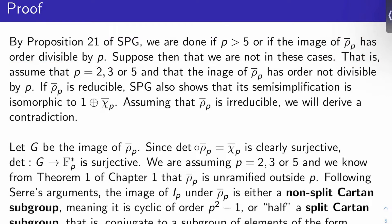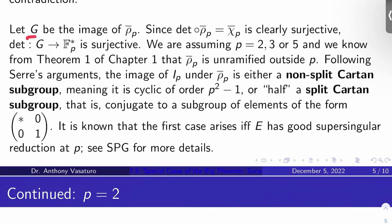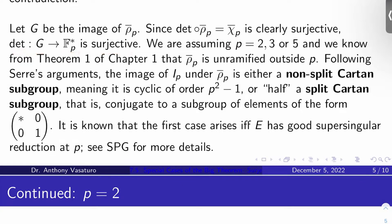So it's a bit of a tricky line, but all we really have to do now is assume P is 2, 3, or 5, assume rho P bar is irreducible, and get a contradiction. Some setup: let G be the image of rho P bar, then det composed with rho P bar is chi P bar. That's surjective, so the determinant map from G to Fp star is surjective. Recall also from Theorem 1 of Chapter 1 that rho P bar is unramified outside P. That's going to be a crucial property that we'll use.